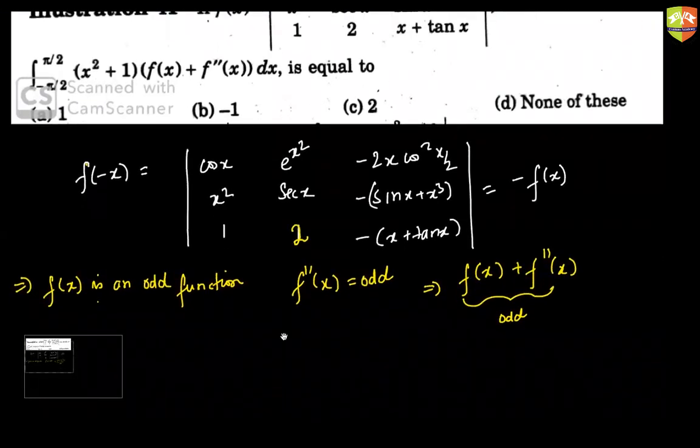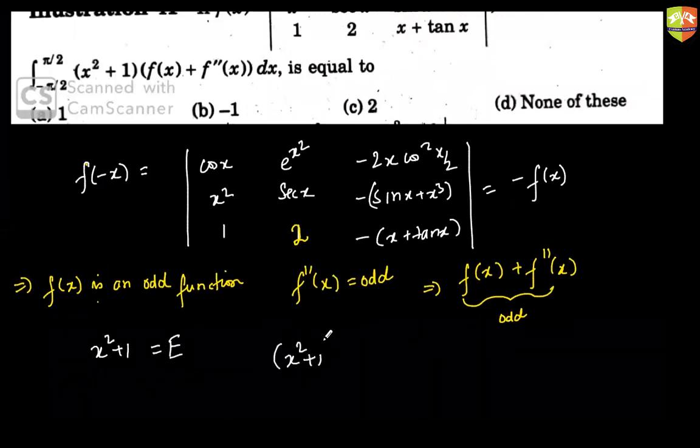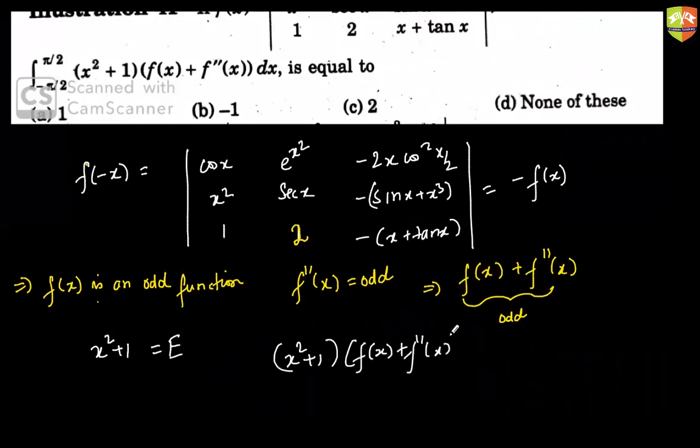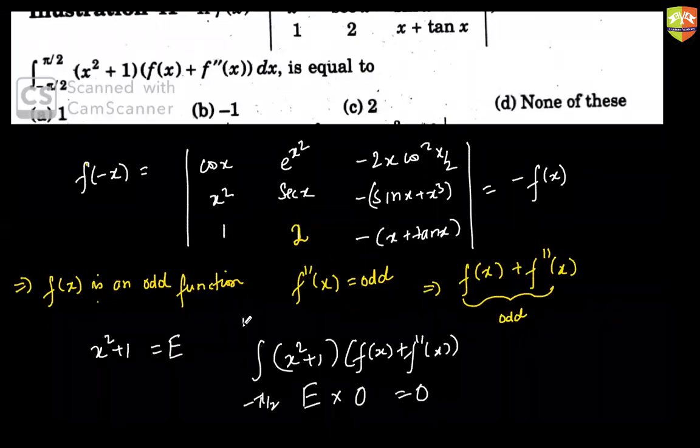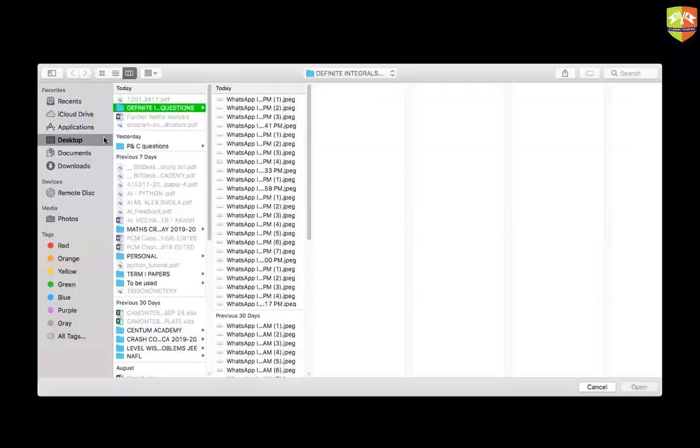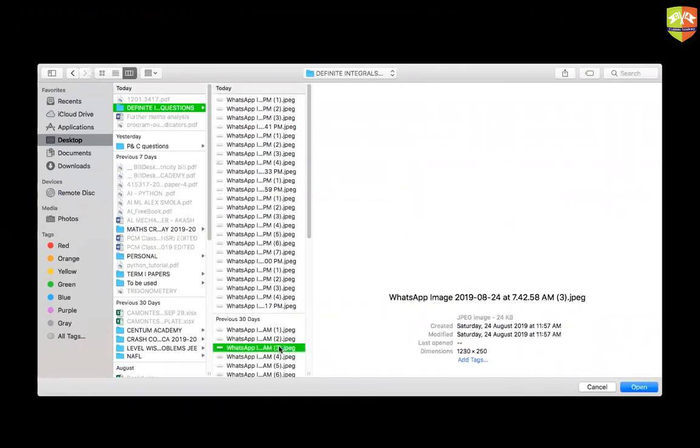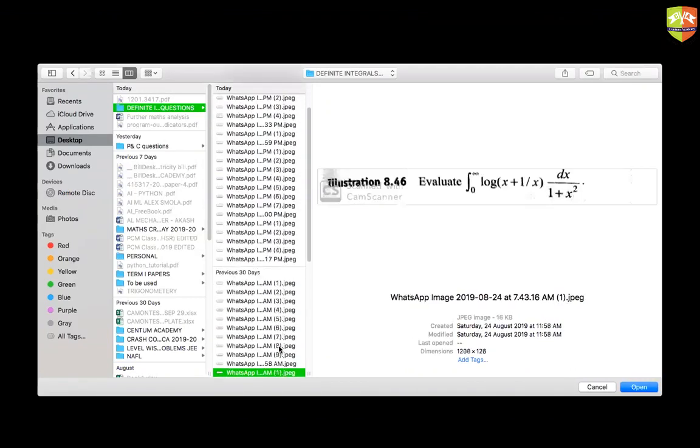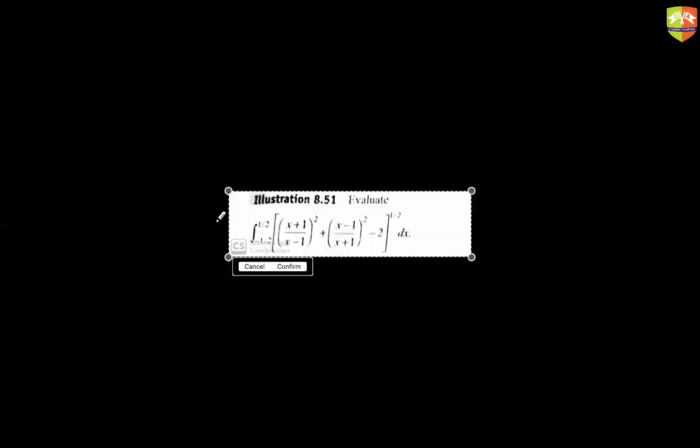Which implies the sum of these two will also be an odd function. Correct? Now remember, x square plus 1 is an even function. So x square plus 1 into f of x plus f double dash x is a product of even and odd, which will actually be odd. So if you are integrating an odd function from minus pi by 2 to pi by 2, your answer has to be 0. Which is none of these. 0 is the answer. So no need to evaluate the determinant at all. It was just based on your understanding of the basic property. Sir, I actually evaluated the determinant. Oh my god. No, sir. But then I cancelled off most of the things because it was odd. So this is a type of learning for you.